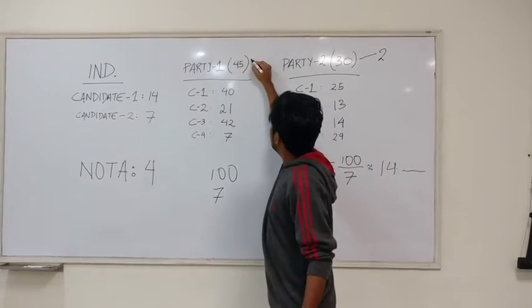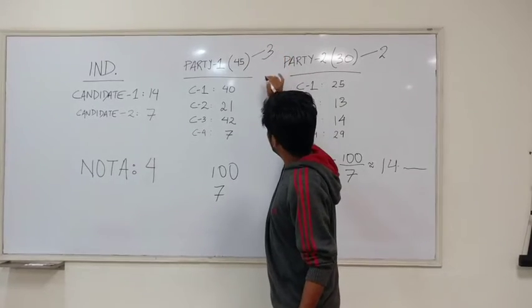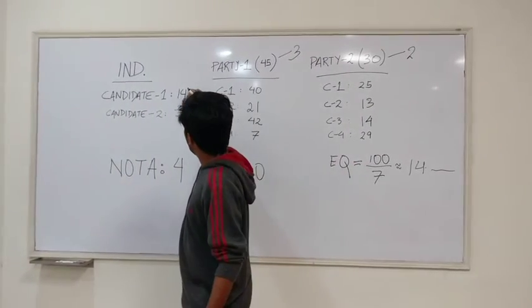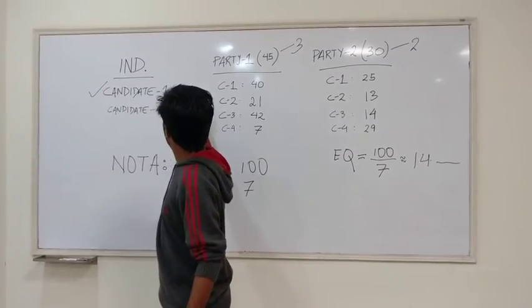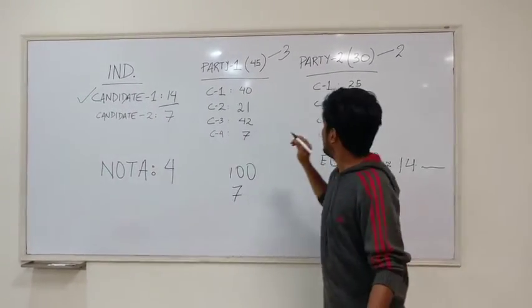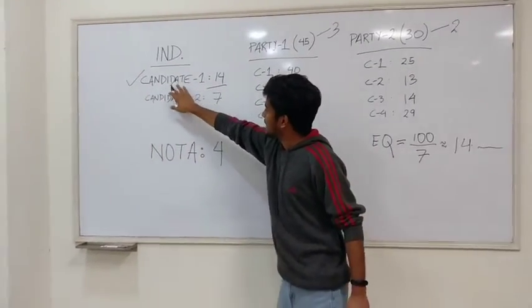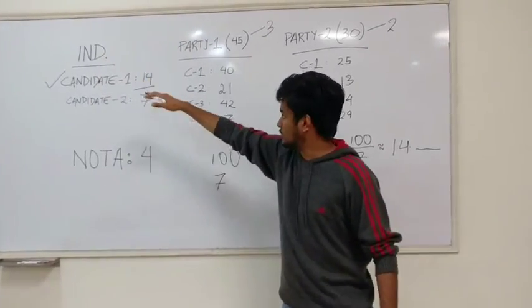Party 1 has potentially gotten three seats in this house already and independent candidate 1 is already in the house because they have 14 votes. The first person in the house is candidate 1 who is independent with 14 votes. They clear the cutoff.